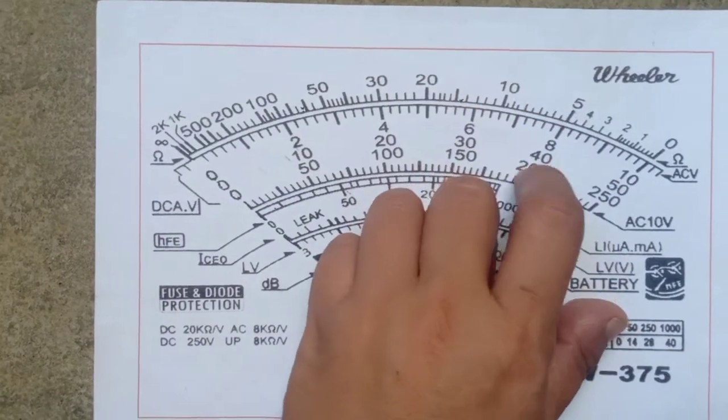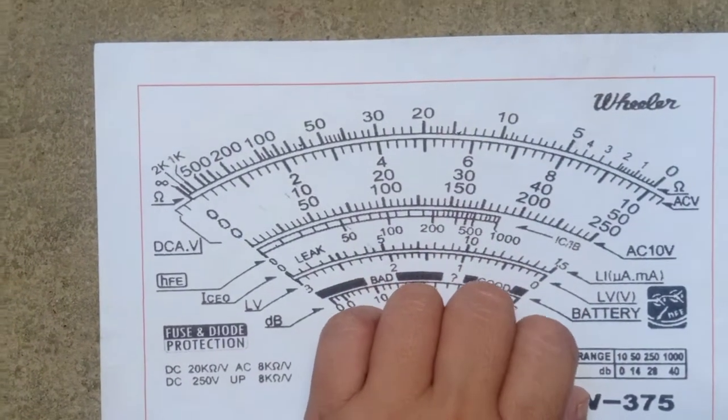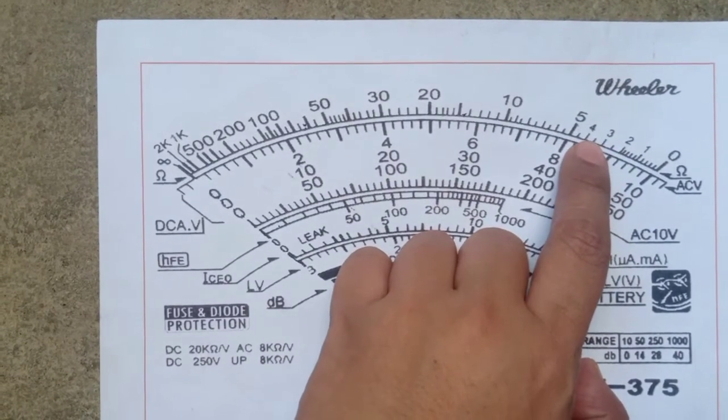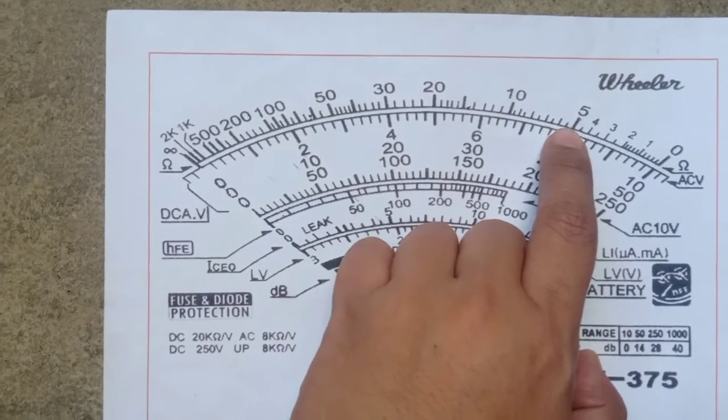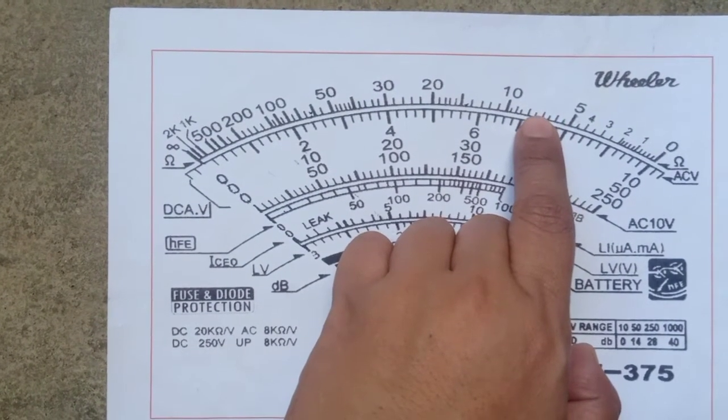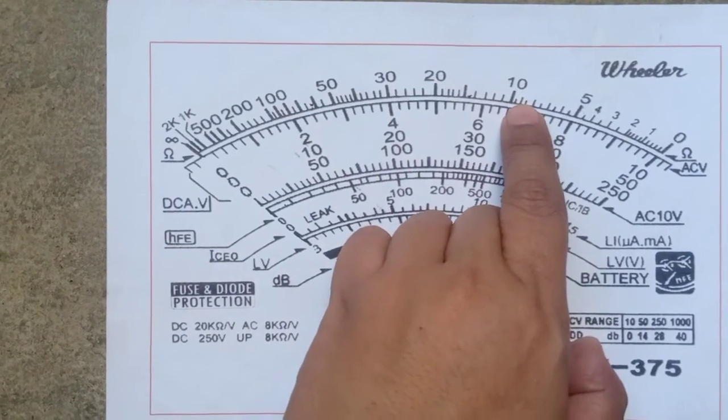2 to 10, ang bilang naman kada lines niyan ay 0.5. So, 2, 2.5, 3, 3.5, 4, 4.5, 5, 5.5, 6, 6.5, 7, 7.5, 8, 8.5, 9, 9.5, 10.